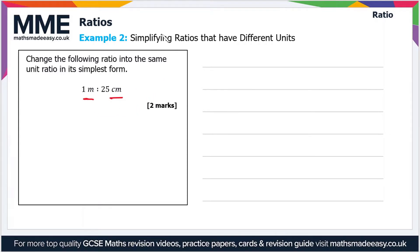So if you know your conversions you should certainly know that 1 meter is 100 centimeters. So we can rewrite the ratio as 100 centimeters to 25 centimeters.